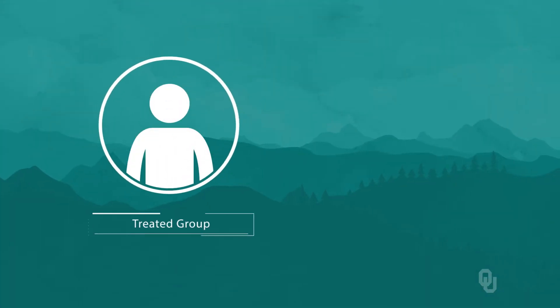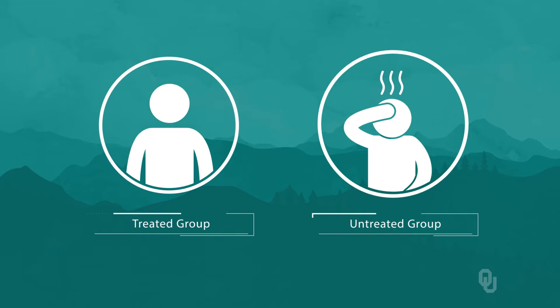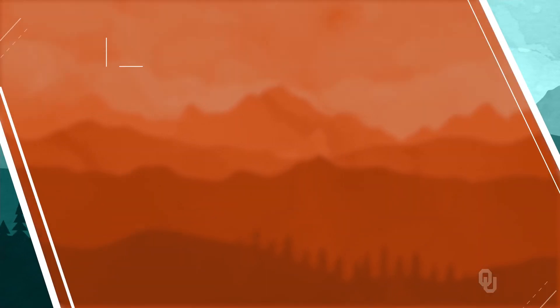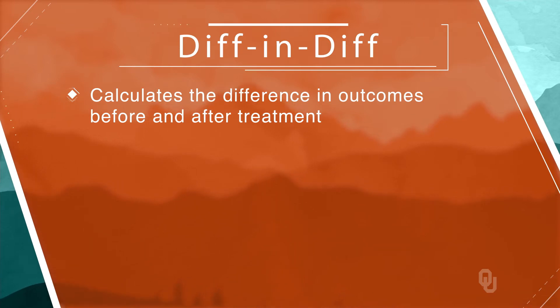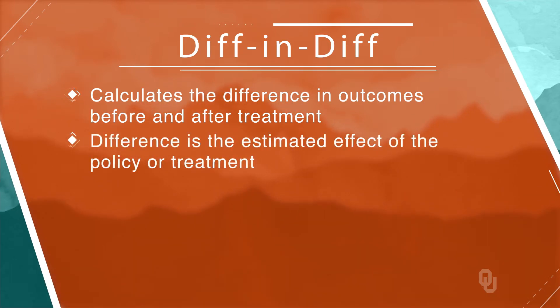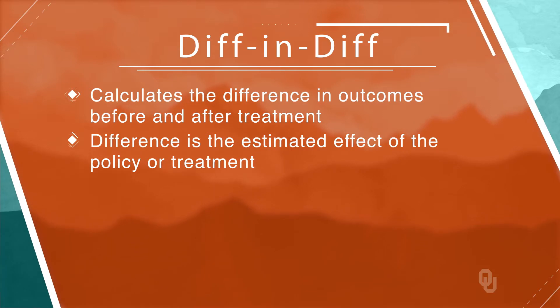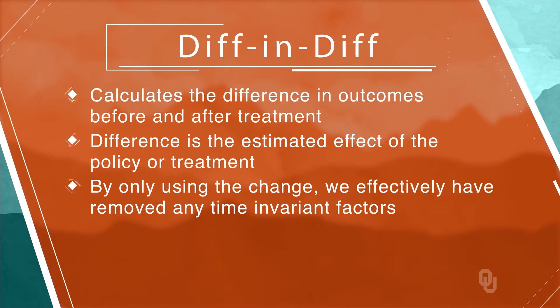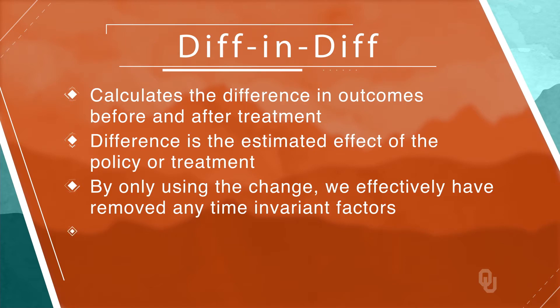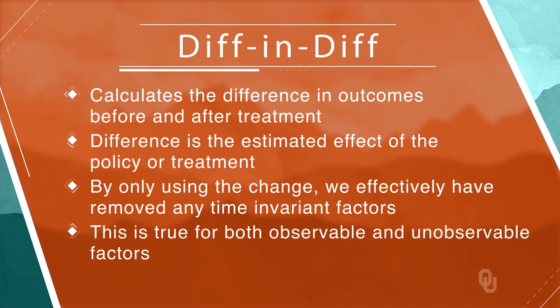The basic idea is to have two groups: one that receives the treatment or is affected by the policy under study, and the other that is not. We also need data on the two groups before and after the treatment occurs. Diff and diff calculates the difference in outcomes between the two groups before treatment and the difference in outcomes between the groups after treatment. Then the difference between those two differences is the estimated effect of the policy or treatment. By only using the change in the difference between the treated and control groups, we effectively remove any time-invariant factors — both observable and unobservable — that might be associated with both the selection to treatment and the outcome.